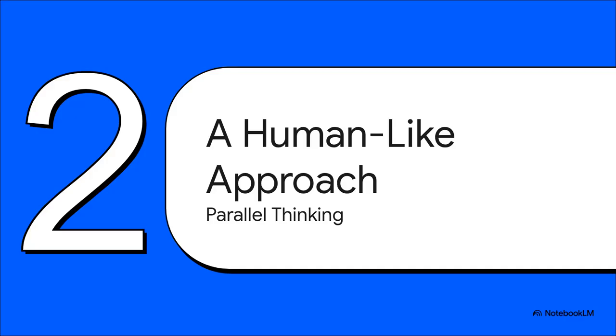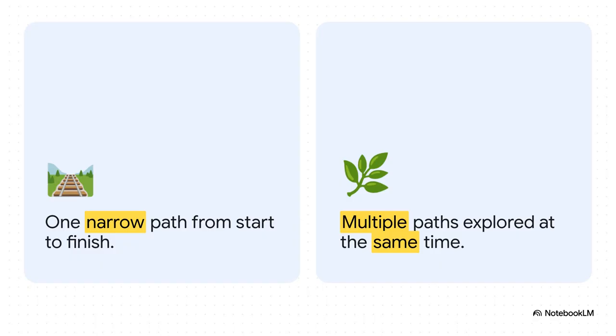But what if there was a better way? This brings us to the solution that Tencent's research is proposing, an approach that feels a lot more like how we humans tackle things, by exploring all sorts of possibilities. And this slide just lays it out perfectly. On the left, you've got the old way, that single, narrow path. But on the right, you've got parallel thinking, where the AI is generating and checking out multiple lines of reasoning all at the same time. It's the difference between walking a tightrope and getting to explore a wide-open field.